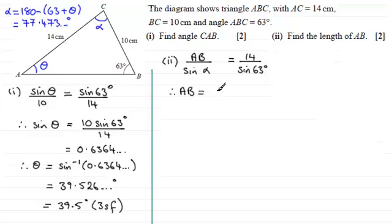To get AB, multiply both sides by sine alpha. So AB equals 14 divided by sine of 63 degrees, multiplied by sine of alpha. Alpha being 77.473 and so on degrees.